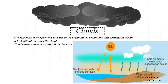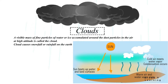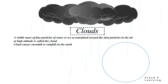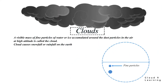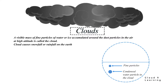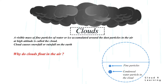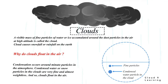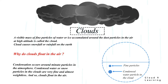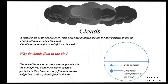When enough vapor condenses around the nuclei, a cloud droplet is formed, as shown in the picture. This cloud droplet measures about 0.5 to 5 mm in diameter. Why do clouds float in the air? Condensation occurs around minute particles in the atmosphere. Condensed water or snow particles in clouds are very fine and almost weightless, so clouds float in the air.